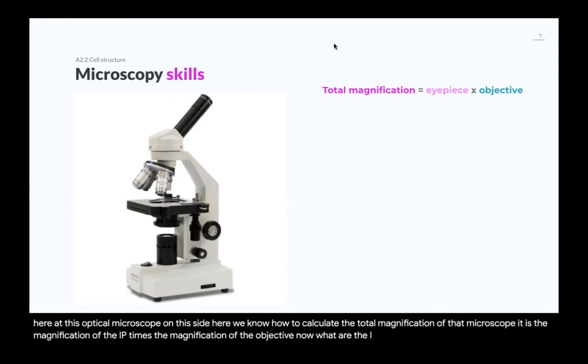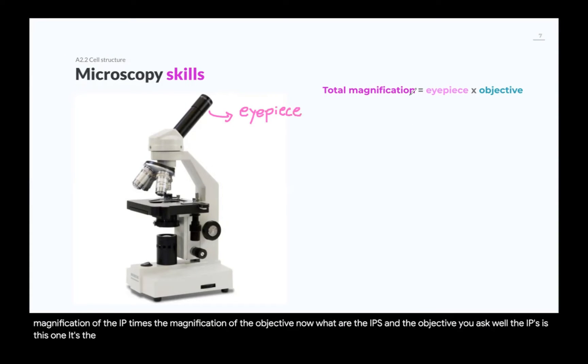What are the eyepiece and the objective, you ask? Well, the eyepiece is this one. It's the piece where you put your eye. That's where you look. And oftentimes, it's 10 times the magnification. It's going to amplify the image 10 times.